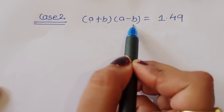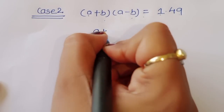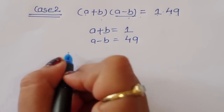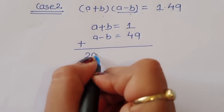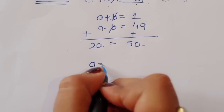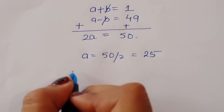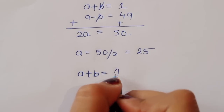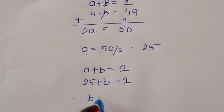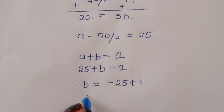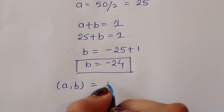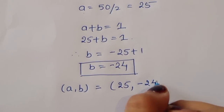Case 2: a plus b times a minus b equals 1 times 49. Comparing terms, a plus b equals 1 and a minus b equals 49. Adding: 2a equals 50, so a equals 25. Since a plus b equals 1 and a equals 25, b equals 1 minus 25, which is minus 24. So in case 2, a equals 25 and b equals minus 24.